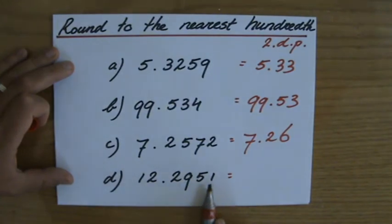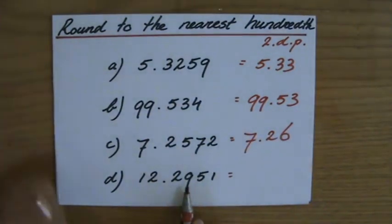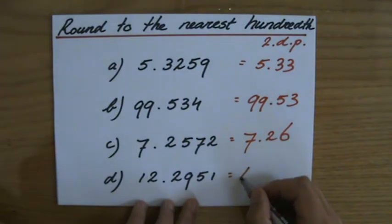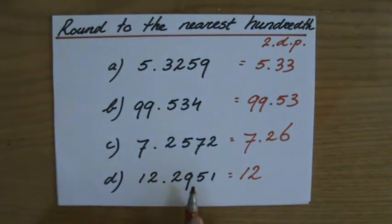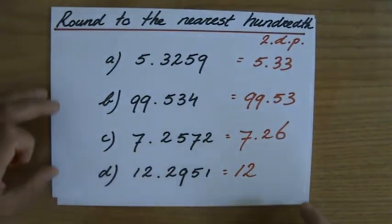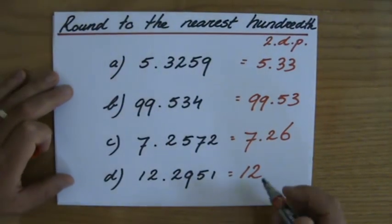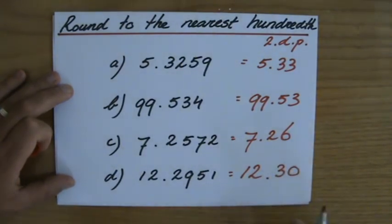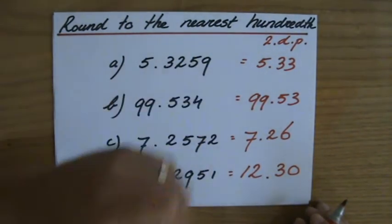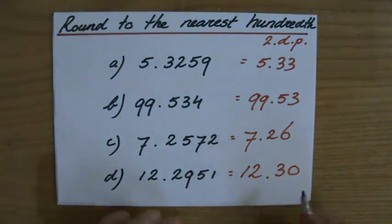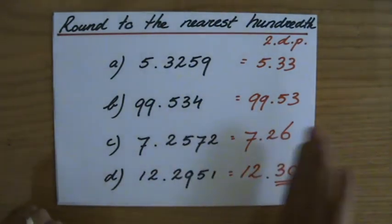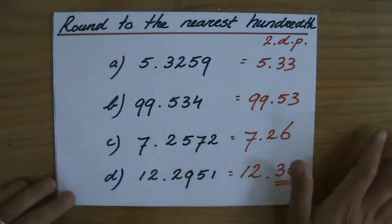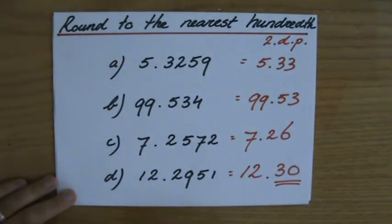12.2951, two decimal places, that's the 9. Stays at 9 or goes up to a 10. And it does go up. And also here, make sure that the 10, the 1 of the 10, gets carried over to the next place value. So in this particular case, it's going to be 12.30. That 0, you have to write down. It's part of your solution at two decimal places. Don't say, oh, I don't have to write that 0 on the right side. No, you have to write down 12.30.